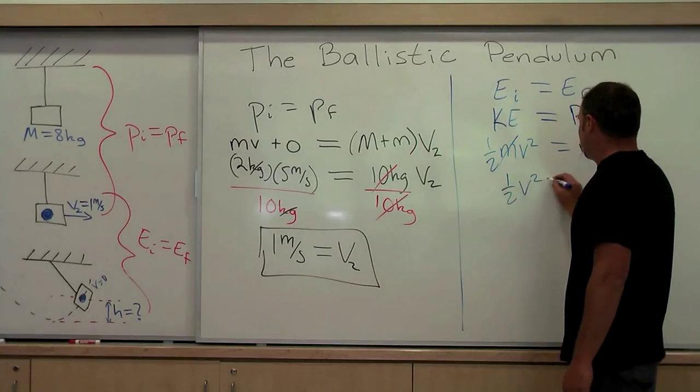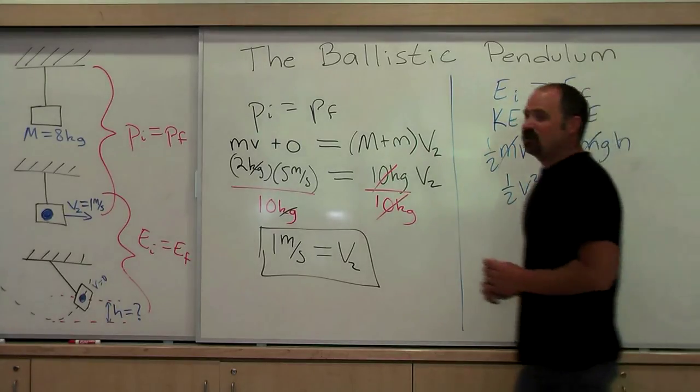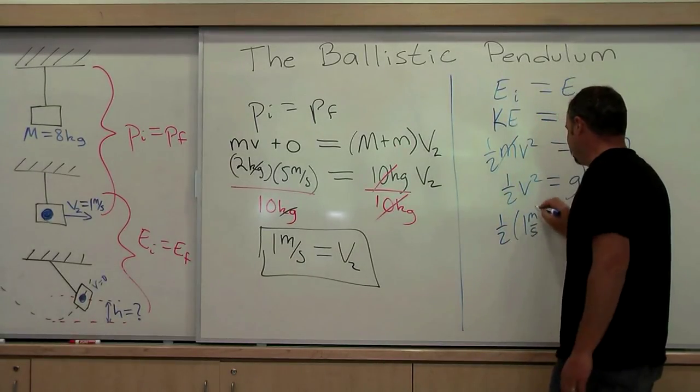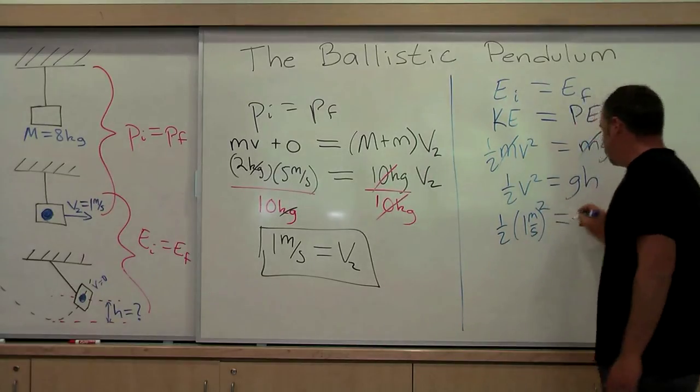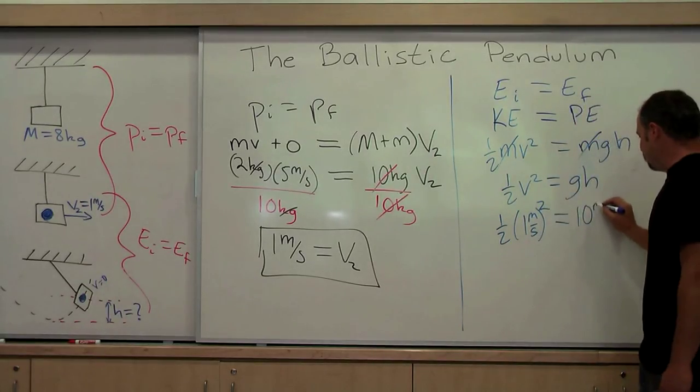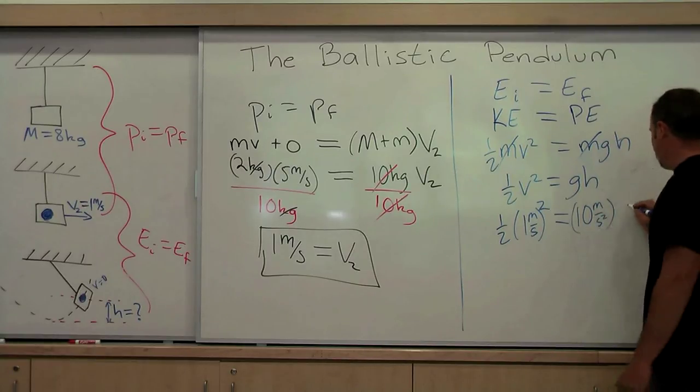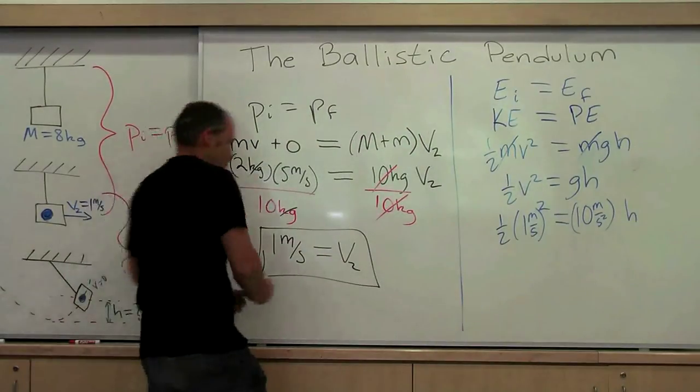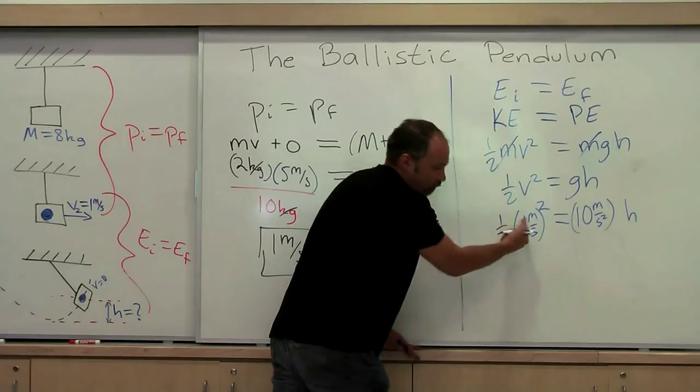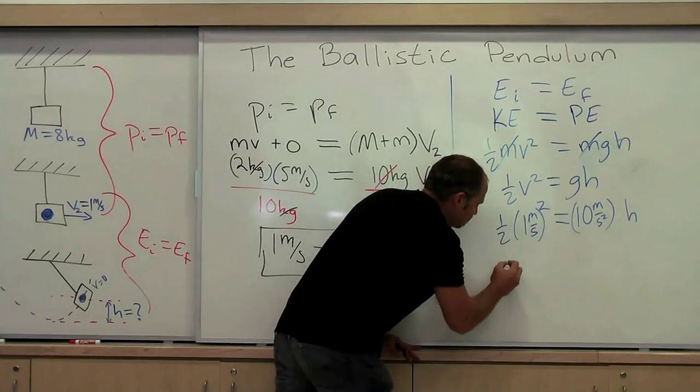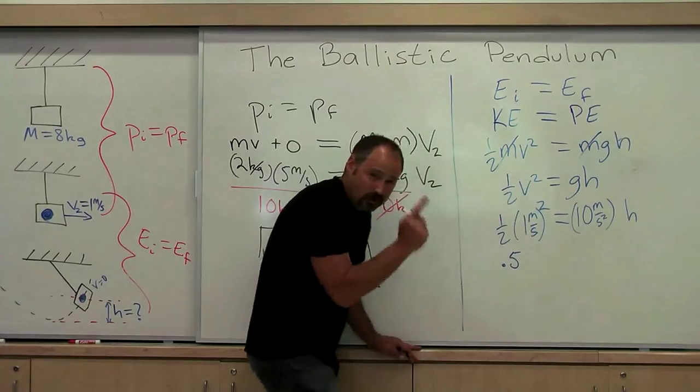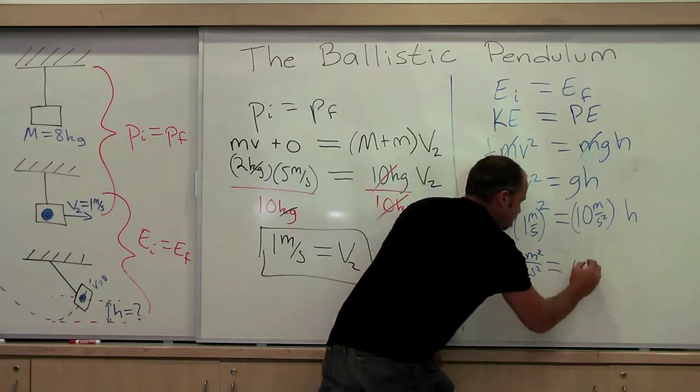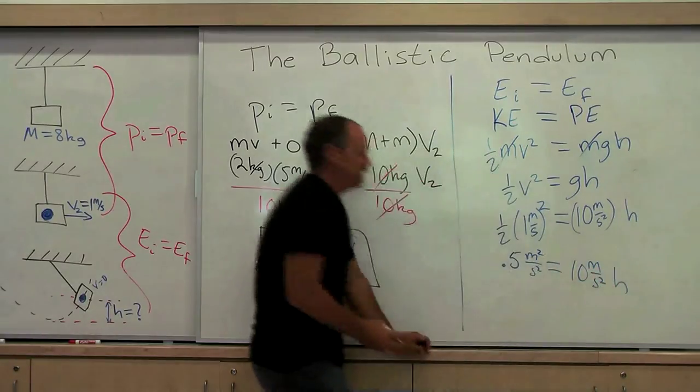So one half v squared is equal to gh. And now we just plug in the numbers. This as we determined is one meter per second, all of it squared. Over here we have the acceleration of gravity which is ten meters per second squared. And then this is the height h. And if we divide both sides, actually first let's multiply it out. So one squared is one times a half. So we have 0.5. Notice that the units get squared as well. Meters squared per seconds squared equals 10 meters per second squared times h.